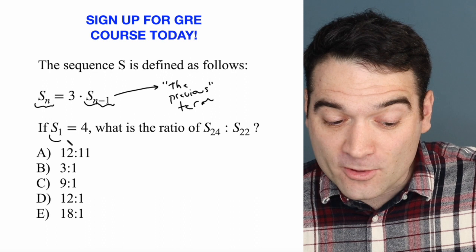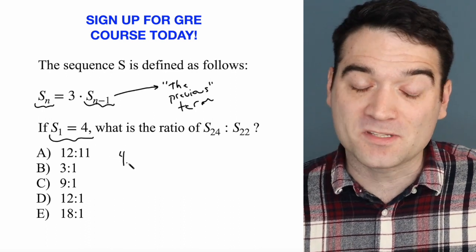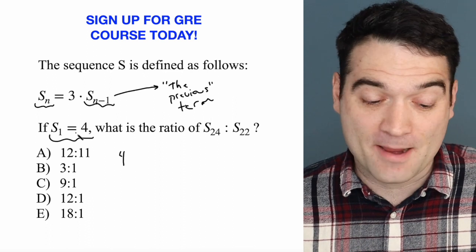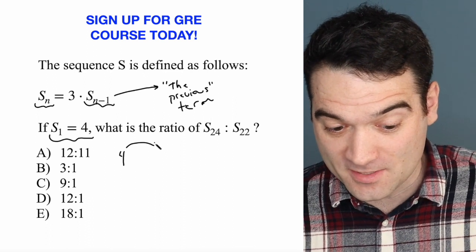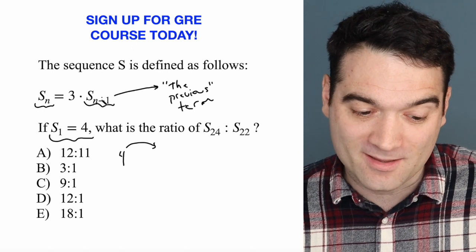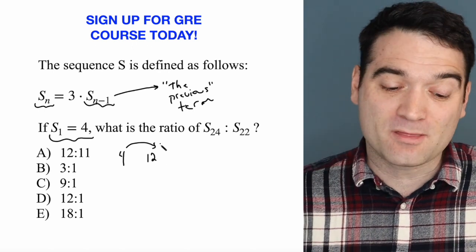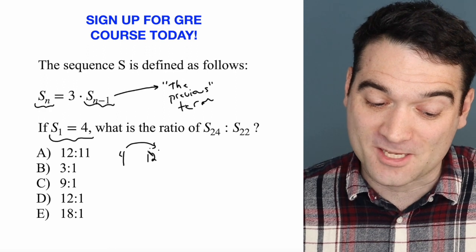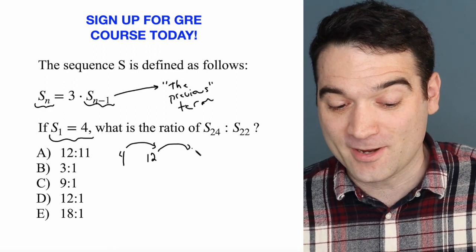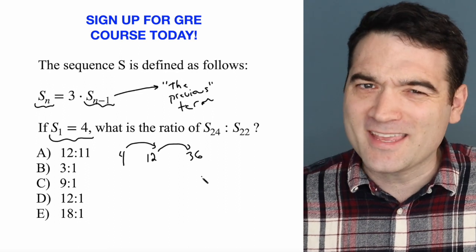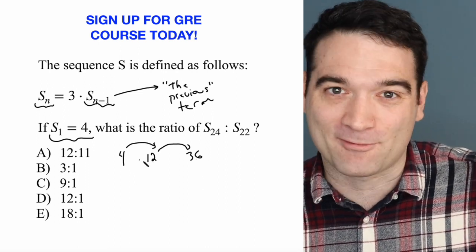We are given the first term: S sub 1 is 4. What's the second term going to be? If I multiply the first term by 3, the second term is going to be 12. And the third term is going to be the previous term, 12, multiplied by 3, so 36. You get the idea — it's not too wild after all.